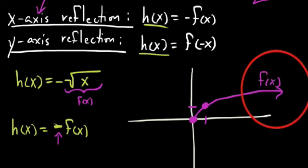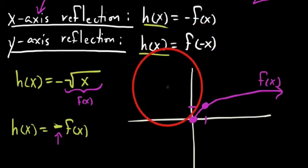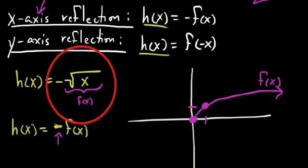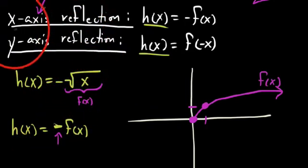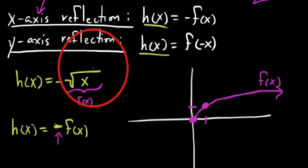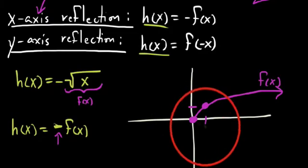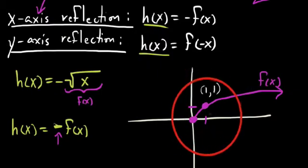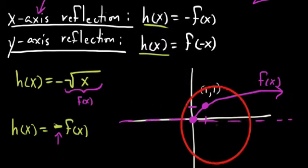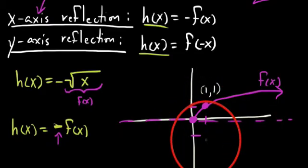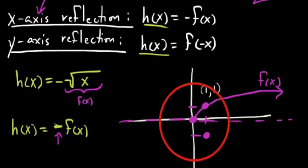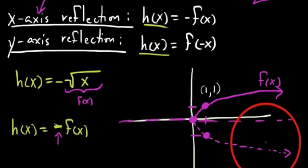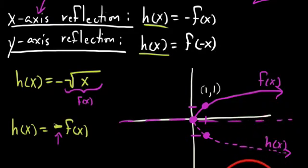So now, by negating this f of x value, or saying I have a negative in front of the f of x function here, we're going to exhibit x-axis reflection. So if you can imagine this being reflected about the x-axis, that's kind of like we would say, so this point here, right, this point here, which was 1, 1, it's actually going to reflect over this axis right here. So it's now going to be down here at 1, negative 1. And so we say its reflection would look like this. And we'll give this dotted function, this dotted graph, the name h of x.